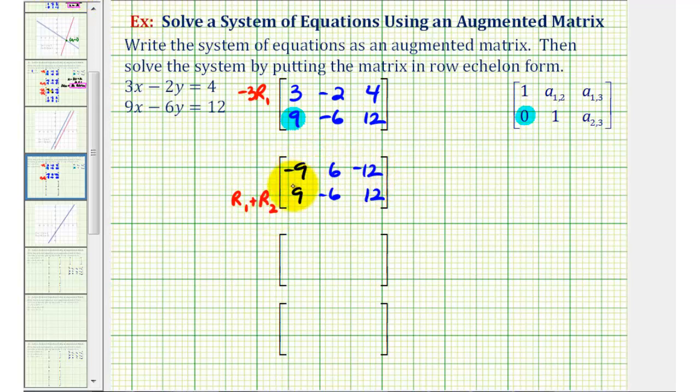We'll keep row one the same for right now. And now for row two, we'll have -9 plus 9, that's zero. 6 plus -6 is also zero. And notice how -12 plus 12 is also zero.